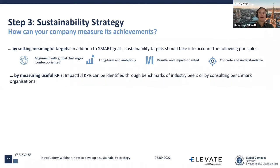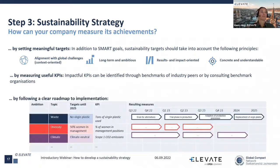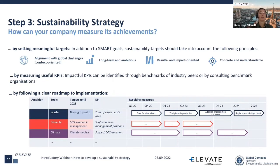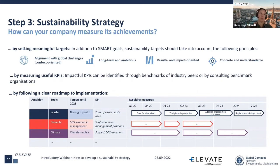Setting adequate KPIs is equally necessary to keep track of sustainability efforts and measure progress. You can find inspiration through the same frameworks mentioned before, or conduct a peer or industry benchmark to see what your peers measure — and then do it better. Your company also needs to identify measures and actions needed to reach the set targets, laid out in a clear roadmap. Here you can see a schematic example showing the material topic, targets until 2025, chosen KPIs, and the resulting measures to be taken in the next few quarters or years until the target level is achieved.